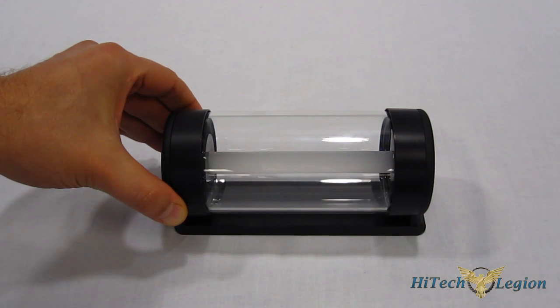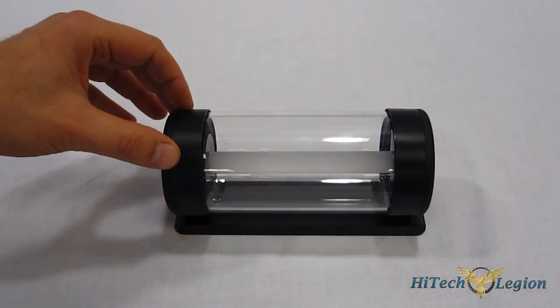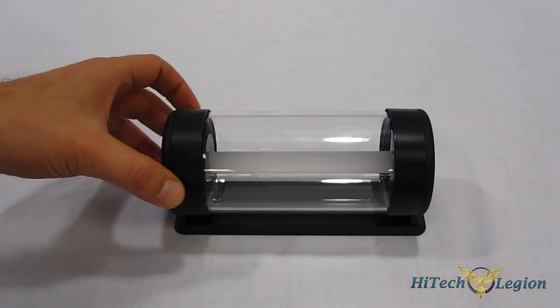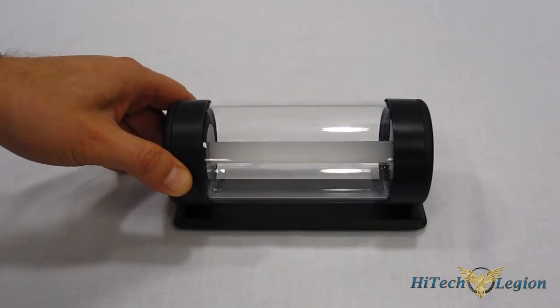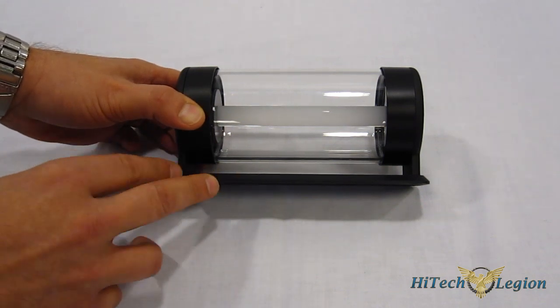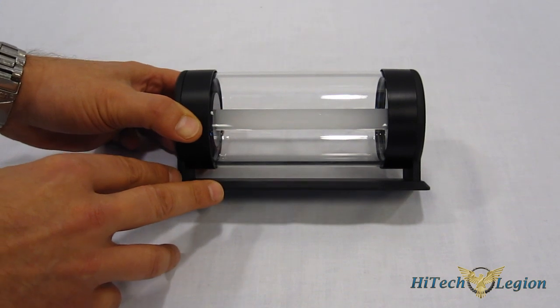First thing you notice about the XSPC Photon is that they've ditched plastic entirely. The tube itself is crystal clear glass. The end caps and bracket are made of CNC-punched aluminum, so you've got really nice materials being used on the Photon itself. And it does have a much richer appearance than a plastic-tubed reservoir.